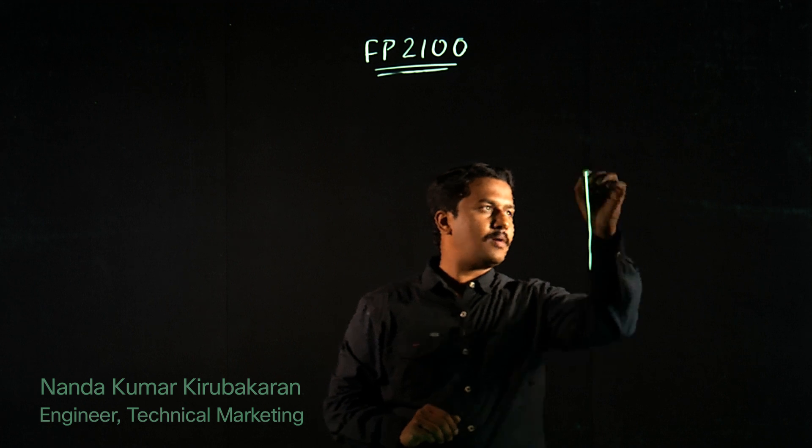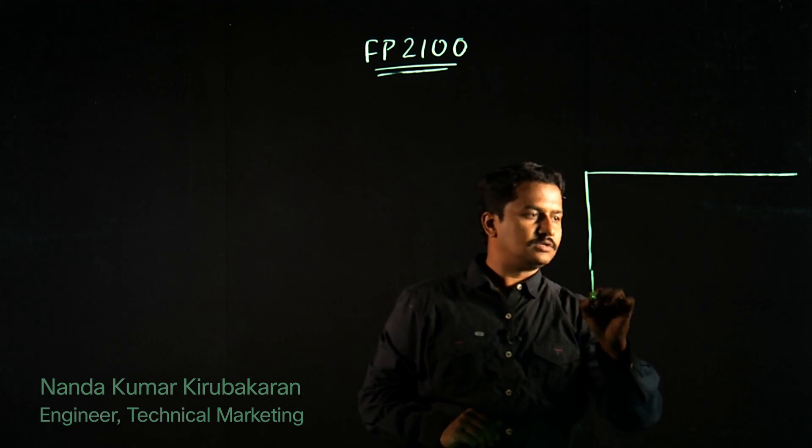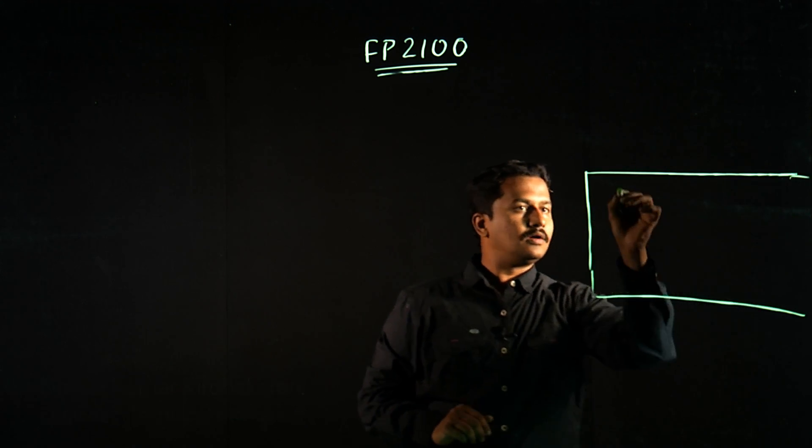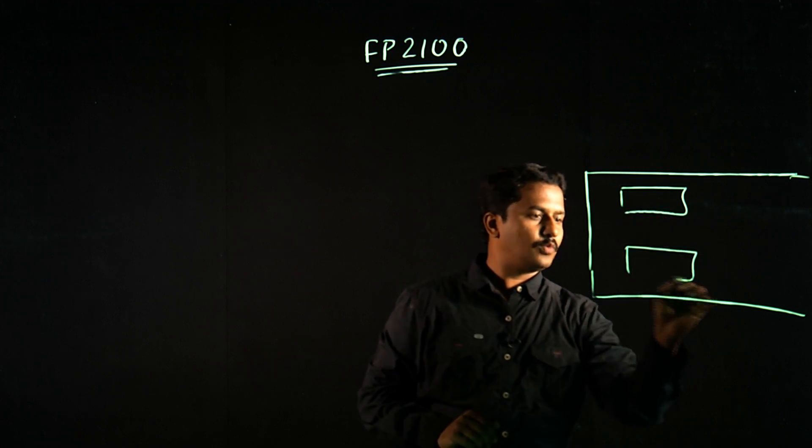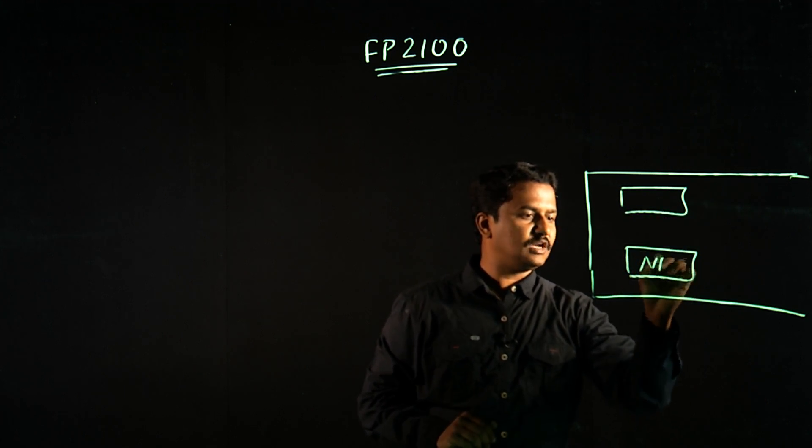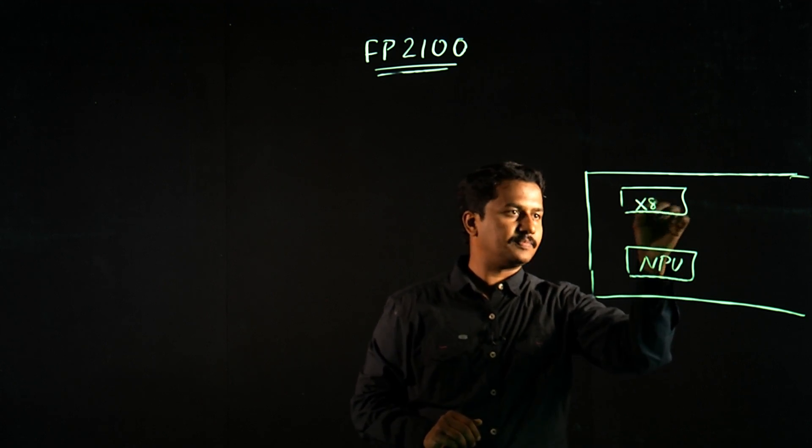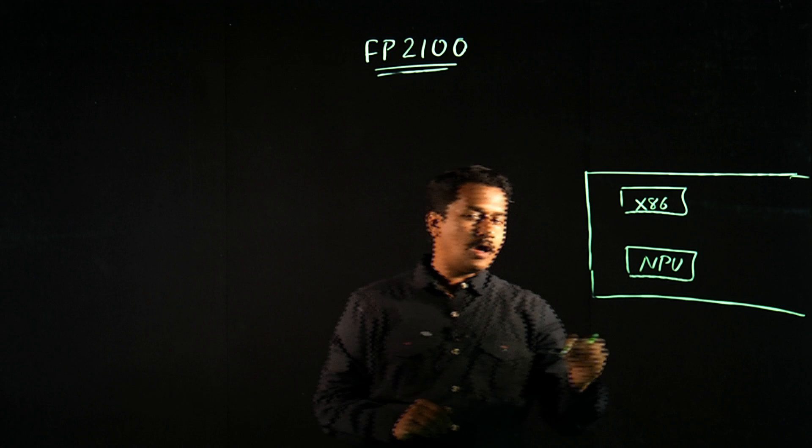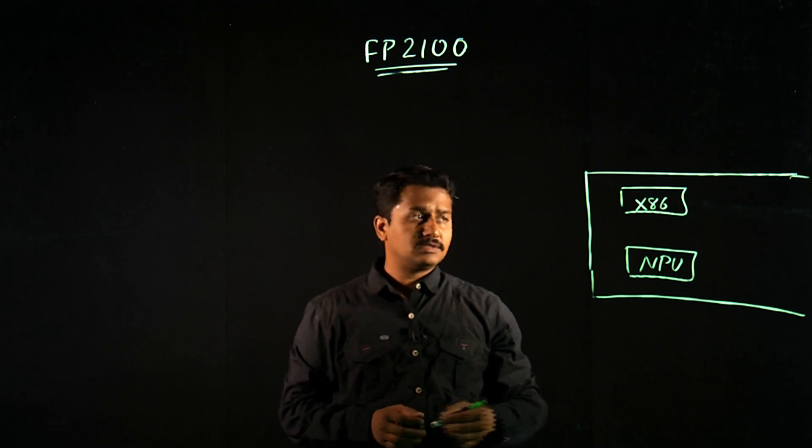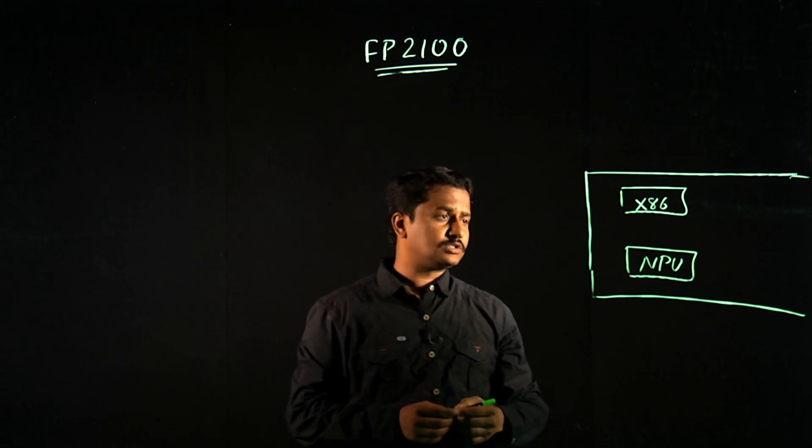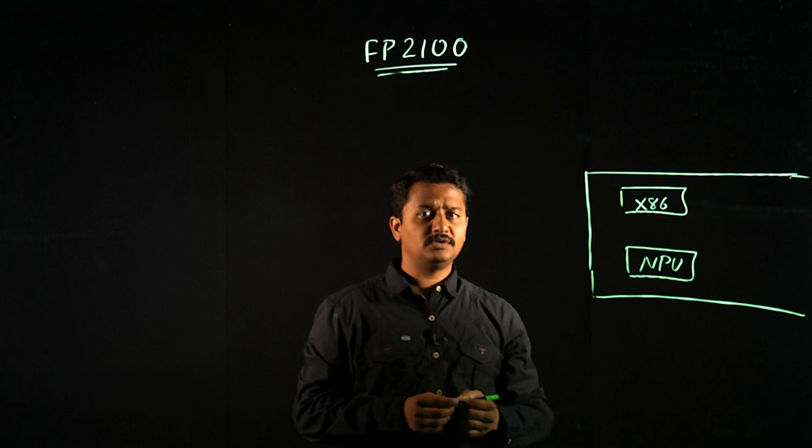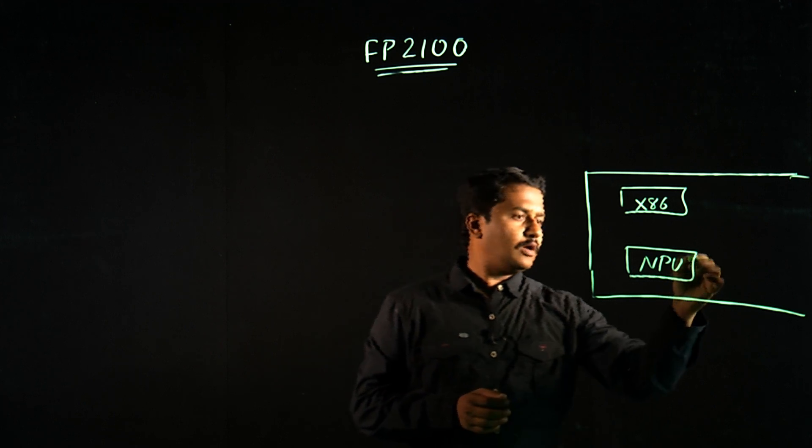This platform has dual processor. We have two processors here. One is NPU, which is Network Processing Unit, and the other one is X86. Apart from all other competitor products, this platform, we have dual processor, which each has its own dedicated functionality.